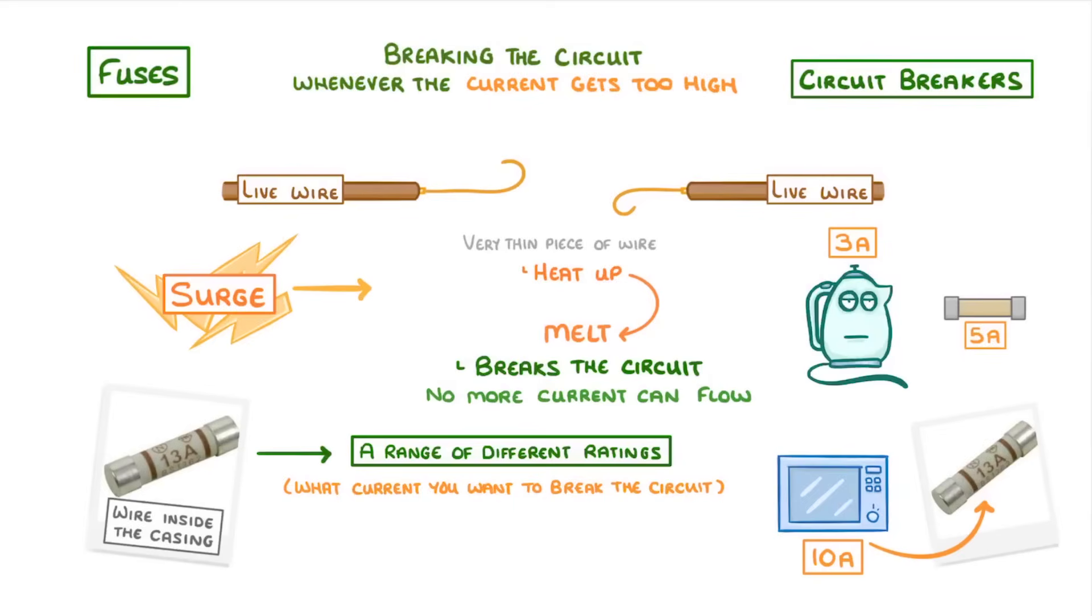The benefit of fuses is that they're simple and cheap, which is why we find them in lots of individual appliances. The downside, though, is that they're permanently broken after a single surge, which means that they have to be replaced each time.